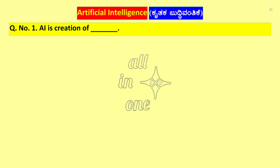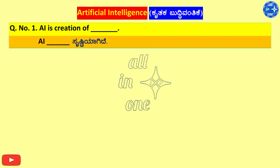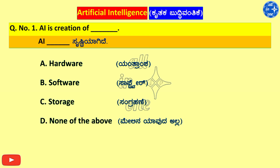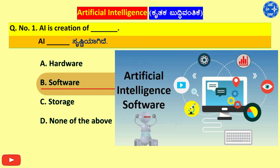Question No. 1. AI is creation of dash. Options: A. Hardware, B. Software, C. Storage, D. None of the above. Right answer is B. Software.